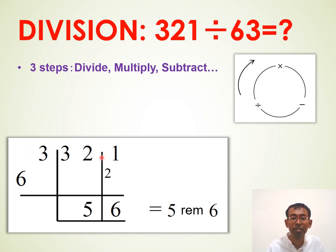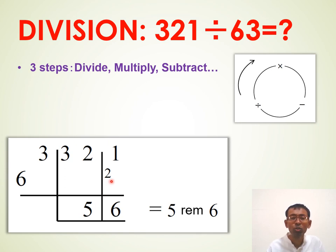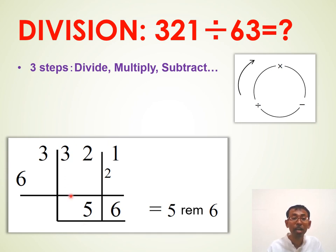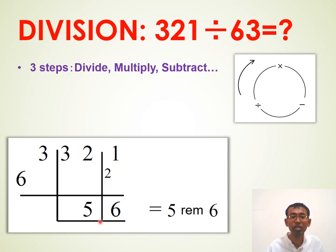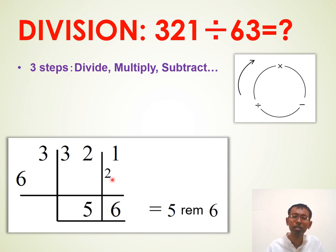Once the division calculation reaches this point, we can simply write down the answer. First step: divide. 32 divided by 6 is 5, remainder 2. We write the 2 just before the next digit 1, making it 21. Then multiply: we multiply the quotient 5 and the flag digit 3. 5 times 3 is 15. We subtract 15 from 21 and get the remainder 6. The answer is 5 remainder 6. We can write the answer with a remainder, or put a decimal point and add zeros to continue the division.